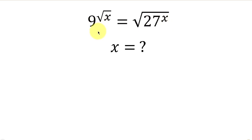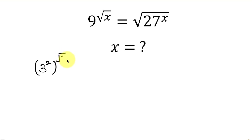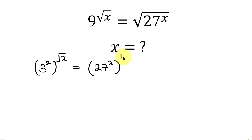Let's start with the left hand side. 9 is a perfect square which means it can be written as 3 squared, and it is raised to the square root of x. This is equal to the right hand side: the square root of 27 to the x, which can be written as 27 to the x raised to the power of half, because according to indices a square root is a power of half.